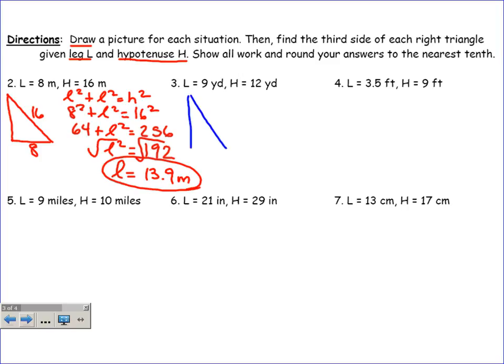Draw a picture over here. This is 9, this is 12, I will write yards in my final answer. 9 squared plus L squared equals 12 squared. 81 plus L squared equals 144. If I subtract 81 from both sides, L squared equals 63, and the square root of 63 is probably 7.9 yards.